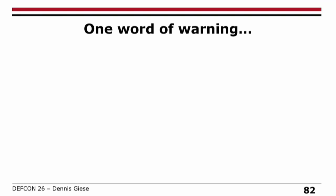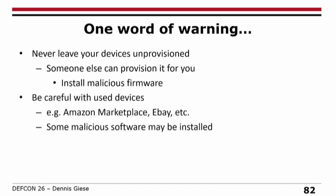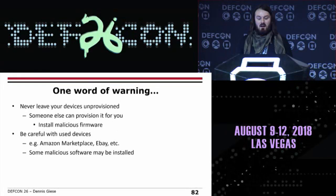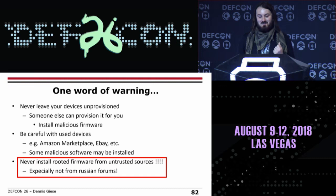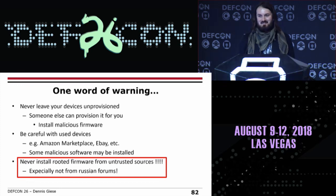One word of warning, because many people don't understand the problem in these cases. Never leave your devices unprovisioned. If you leave your devices unprovisioned, they have an open Wi-Fi access point, and someone else — your nice neighbor — can provision it and install malicious firmware. Also, be very careful with used devices: if you buy from Amazon Marketplace or eBay, you have no idea what software is running and no way to check for malicious software. And — this should be common sense — never install rooted firmware from untrusted sources. For vacuum cleaners, there have been Russian forum posts offering pre-rooted devices with changed language files. I mean, why would people install that? It's very easy to create your own firmware, but some people say, 'I saved five minutes' and just download some weird firmware from a Russian website.